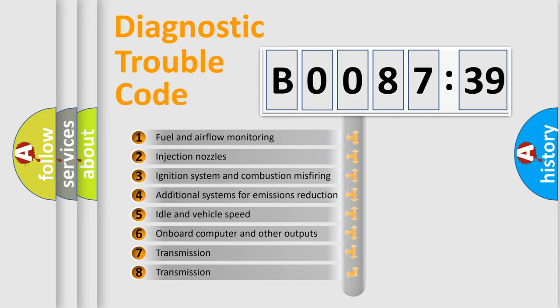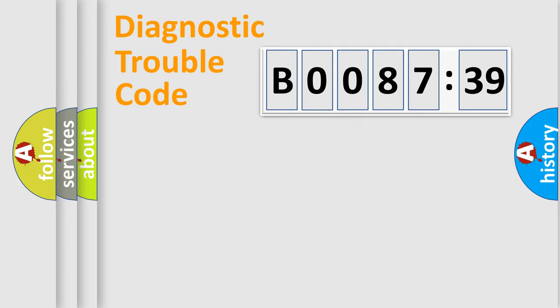The third character specifies a subset of errors. The distribution shown is valid only for the standardized DTC code. Only the last two characters define the specific fault of the group.